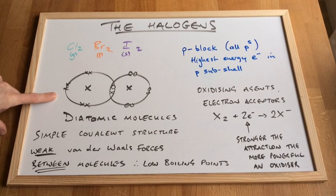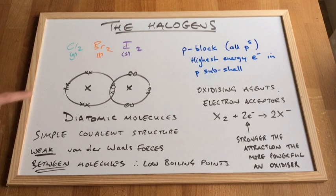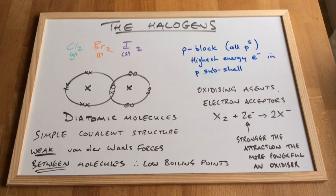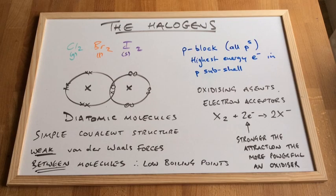They form diatomic molecules — I'm just using X to represent any halogen. So we have 7 outer electrons in each shell, and so rather than exist as an atom, they prefer to pair up and form a diatomic molecule. We have this single covalent bond, which is the shared pair of electrons — a very simple covalent structure. And so they have weak van der Waals forces between the molecules, which gives them very low boiling points.